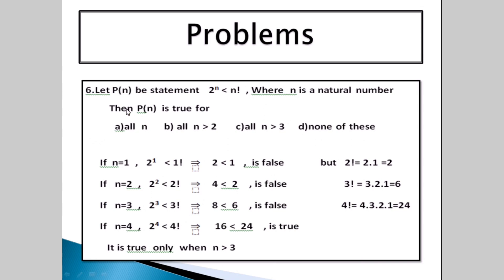Next, a different type of problem: let P(n) be the statement 2 to the power of n less than n factorial, where n is a natural number. Then P(n) is true for which option? The options are: for all n, all n greater than 2, all n greater than 3, none of these. We need to check which condition satisfies 2 to the power of n less than n factorial.